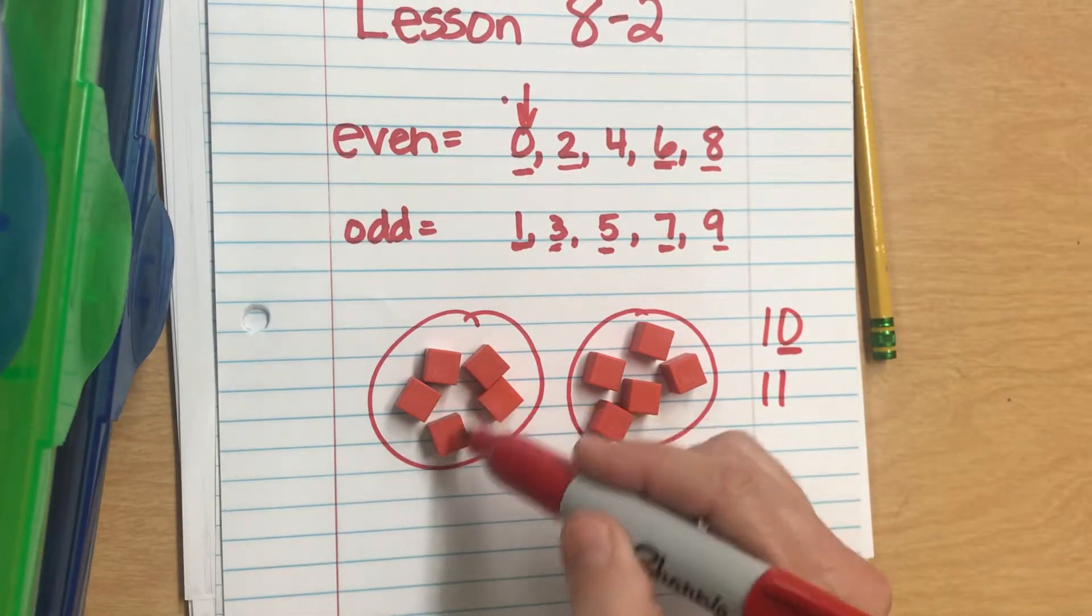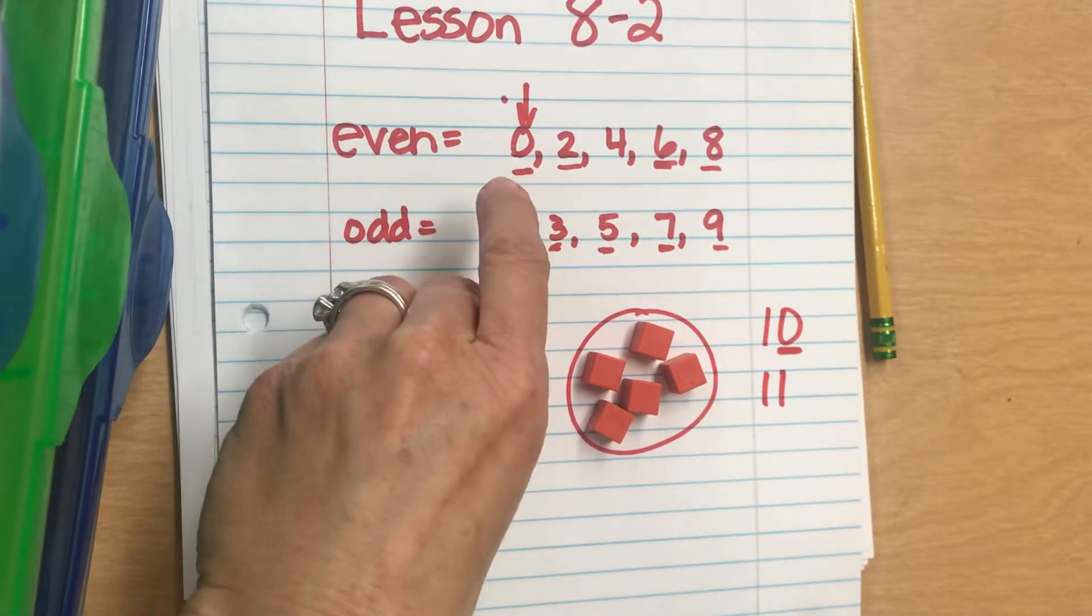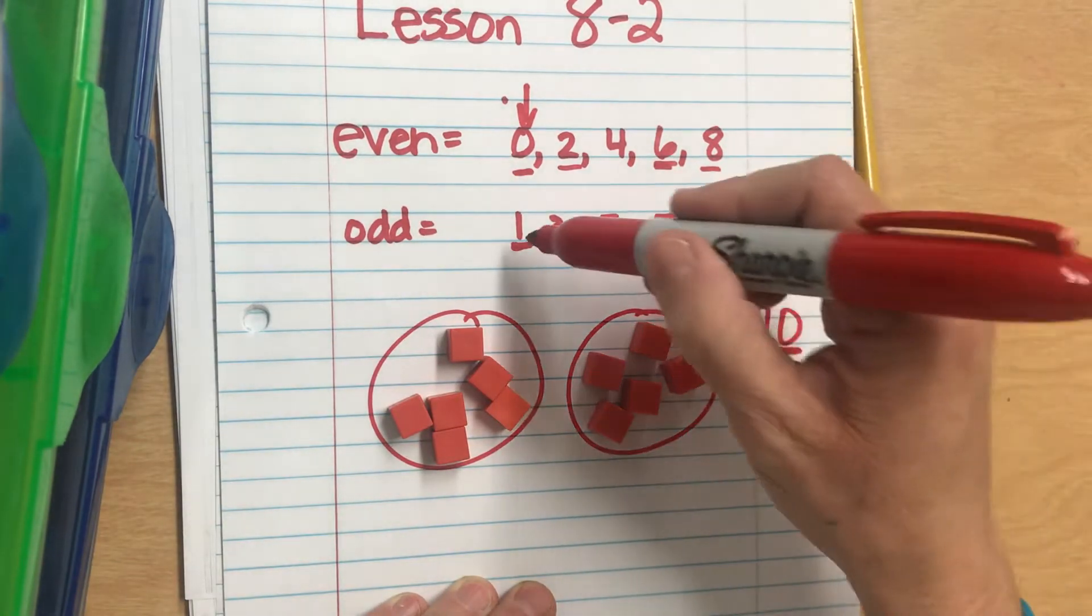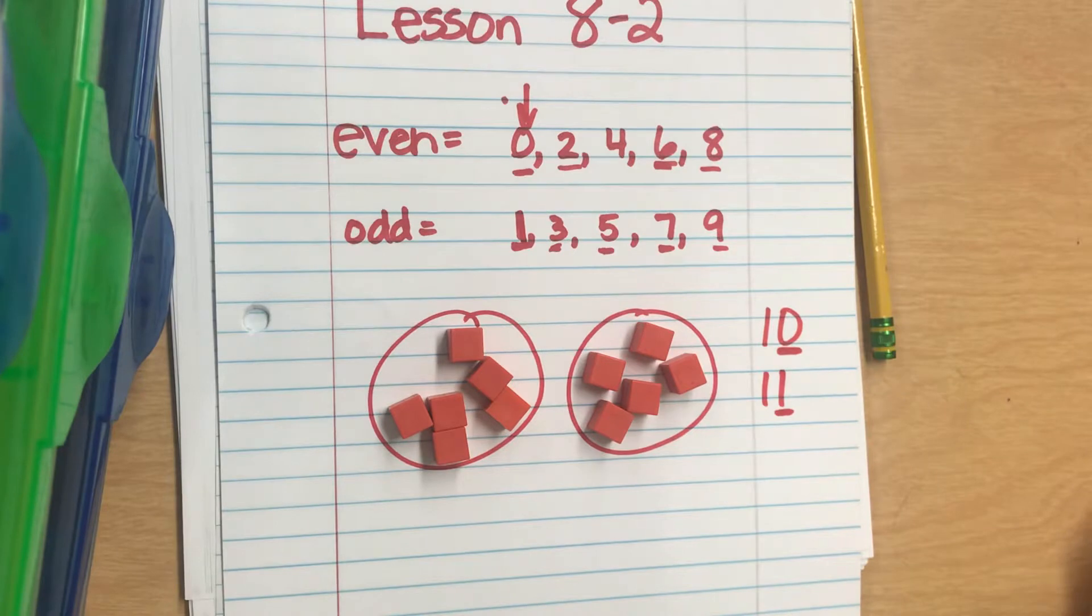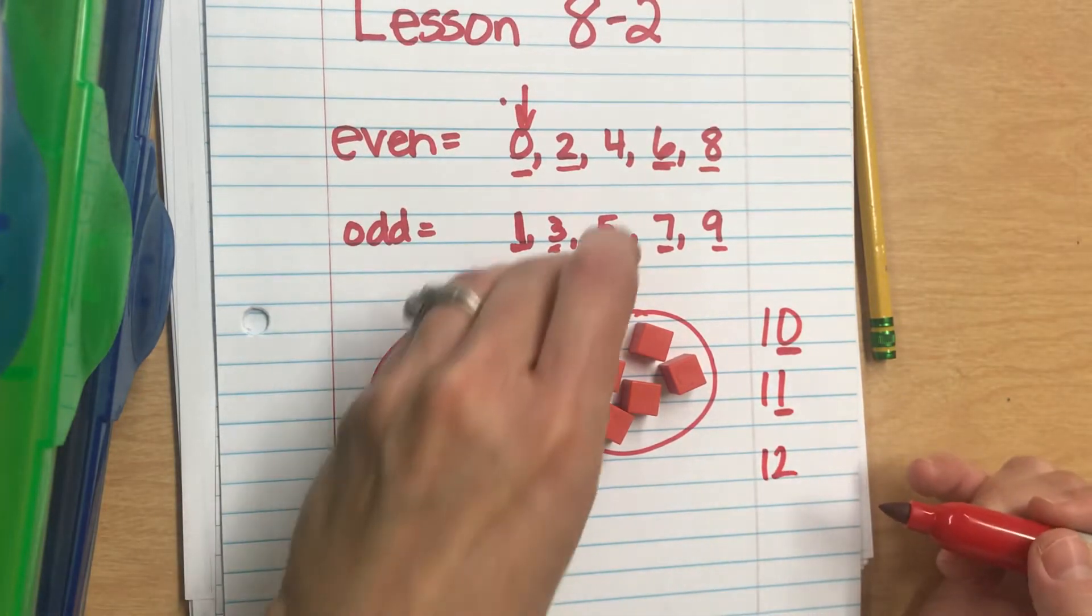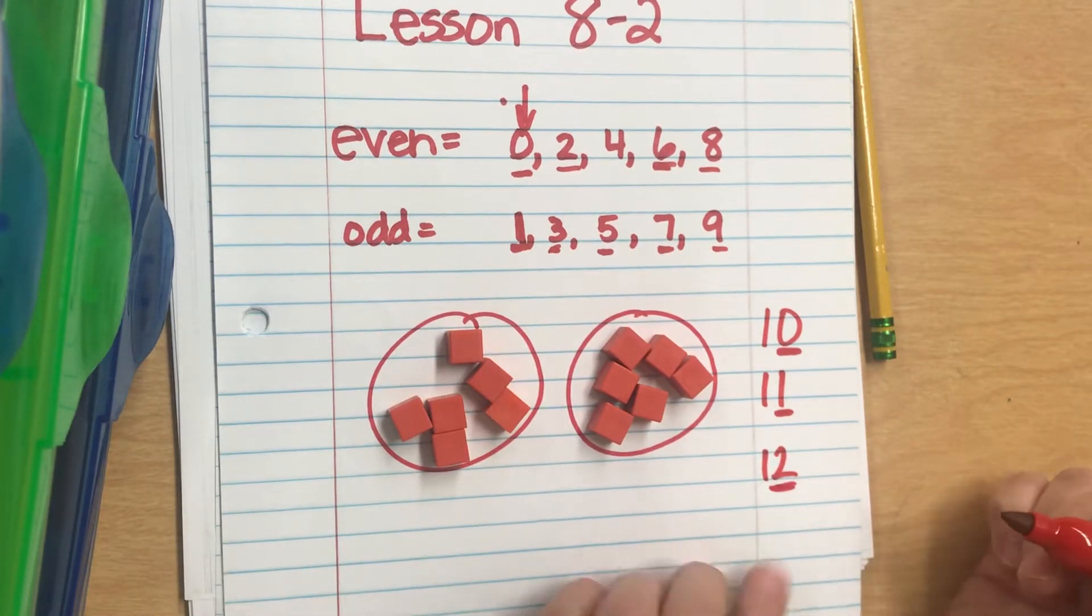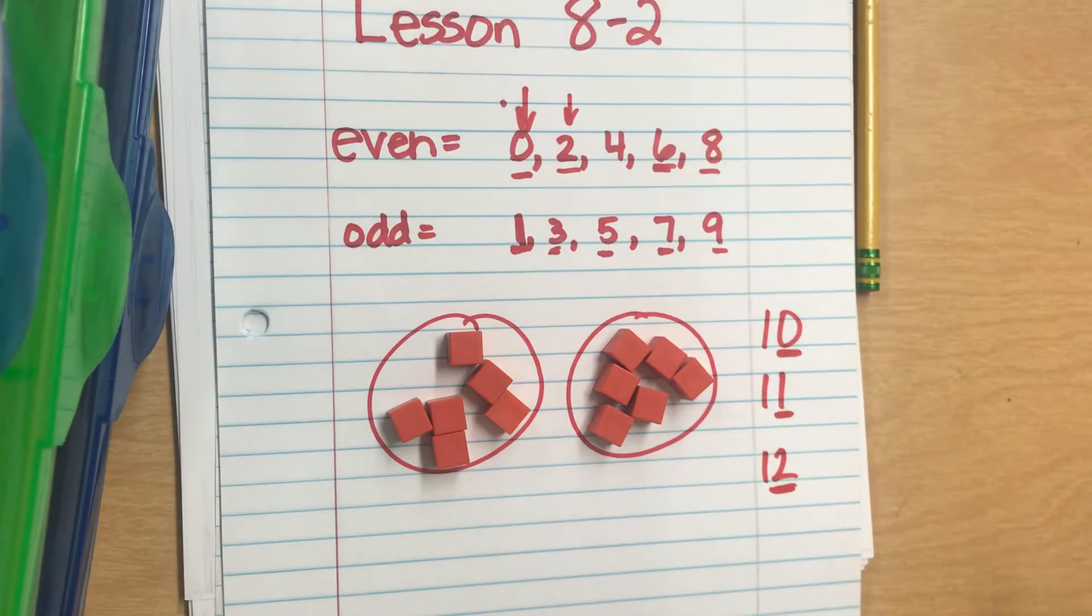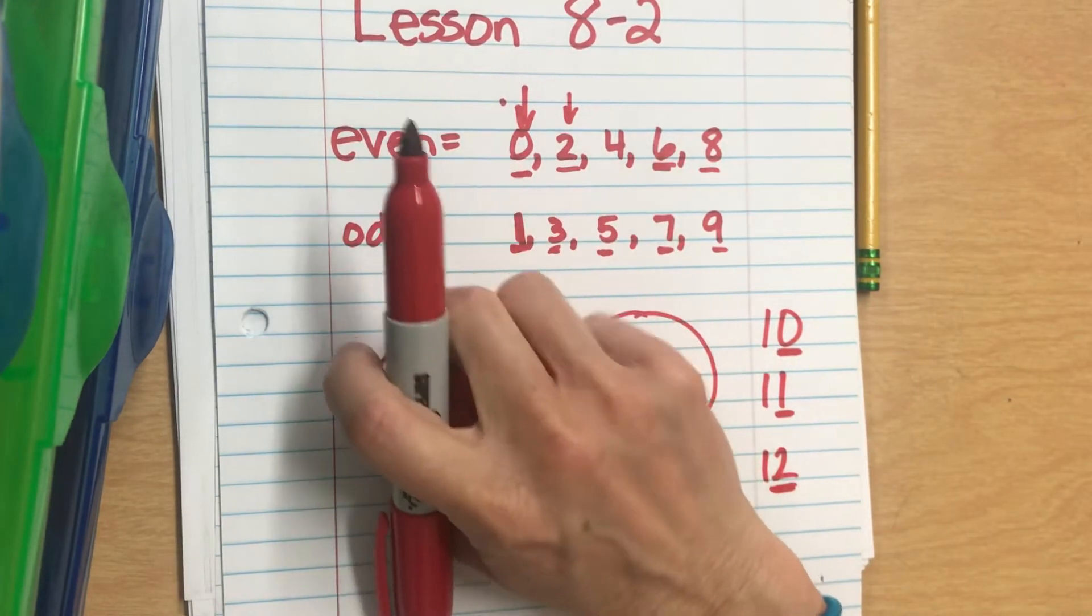Eleven—we have five in each group. What number's in the ones place? One. It's odd. It only matters what's in the ones place. Twelve—we don't really have to think six and six; we just have to look at this number. What number's in the ones place? Two. So let's take a look at the worksheet.